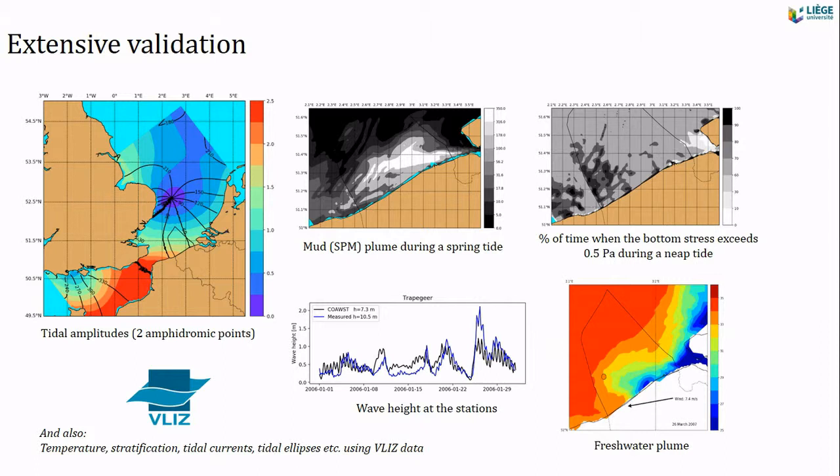Extensive validation was conducted to ensure that the model performs well. You see the graph of the amphidromes of the tidal amplitude, the suspended particulate matter near Knokke-Heist, the map, the bottom stress map, the salinity plume, the wave height, and also temperature, salinity, tidal currents, and so on.